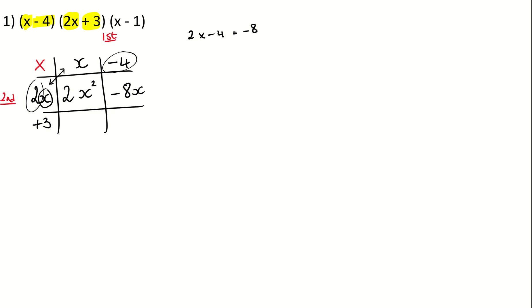Then I'm going to do the positive 3 times x, so there is a positive 3x. And the last column is a positive 3 times a negative 4 — you can put that into your calculator and you get a negative 12.